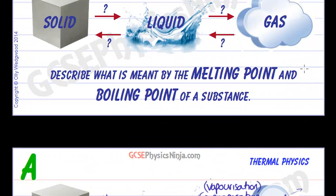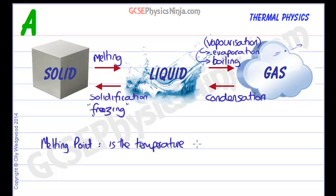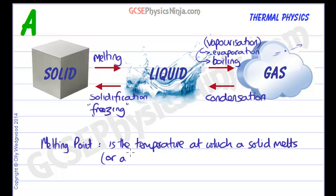Now, what is meant by the melting point and the boiling point of a substance? The melting point is the temperature at which a solid melts — or equivalently, the temperature at which a liquid freezes and solidifies. For most materials, the freezing point is the same as the melting point, so they are the same thing.